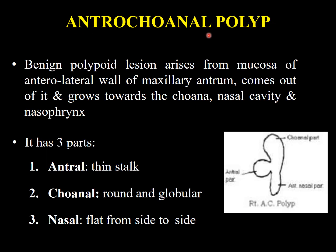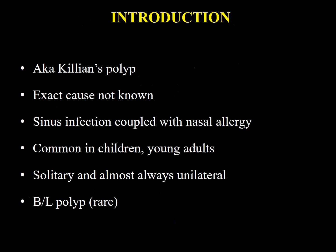The second type is the antrochoanal polyp. It is a benign polypoidal lesion arising from the mucosa of the anterior lateral wall of the maxillary antrum, coming out through the ostium and growing towards the choana — the posterior end of the nostril — entering the nasal cavity and the nasopharynx. It has three parts: the antral part, which is a thin stalk; the choanal part, which is round and globular; and the nasal part, which is flat from side to side.